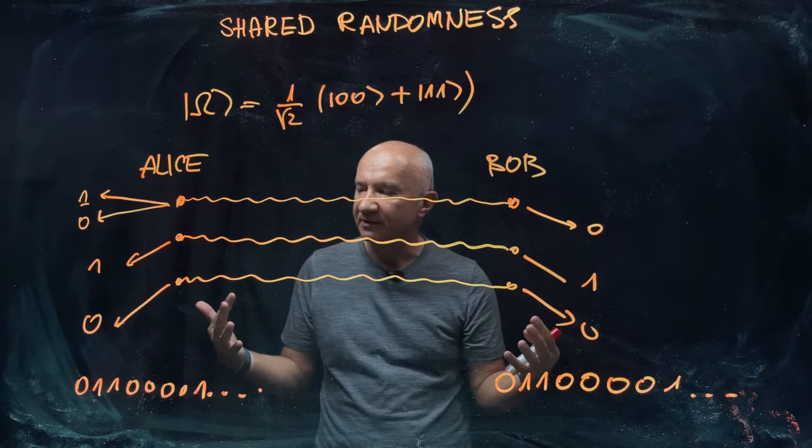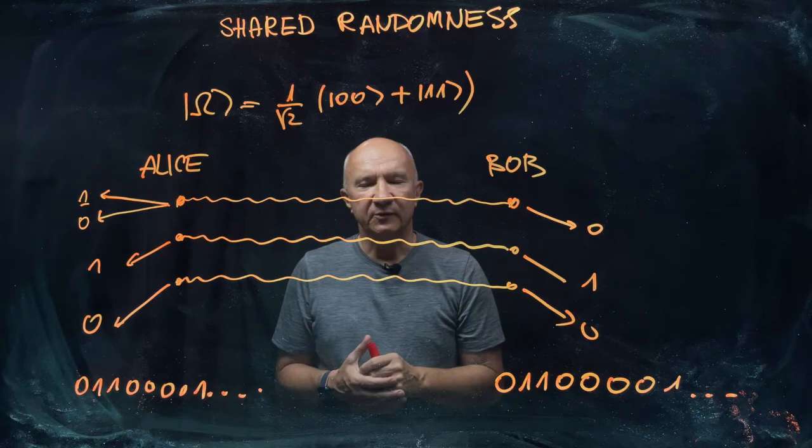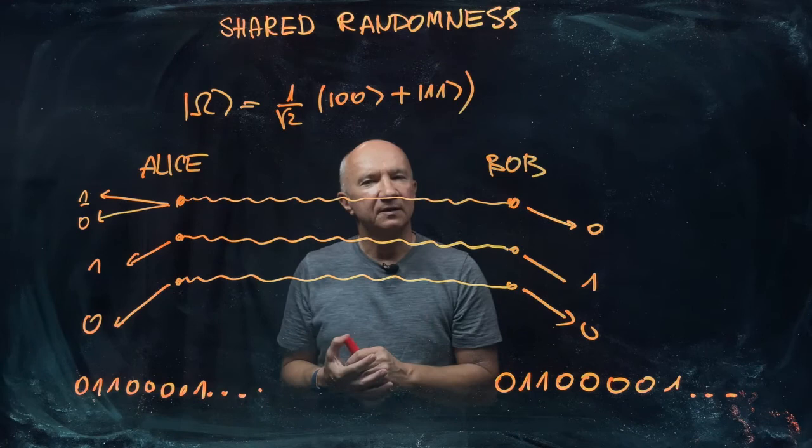But as it happens, generating identical random binary strings in two different locations is actually very important for secure communication. So we will modify this scheme later on when we talk about quantum key distribution and quantum cryptography.